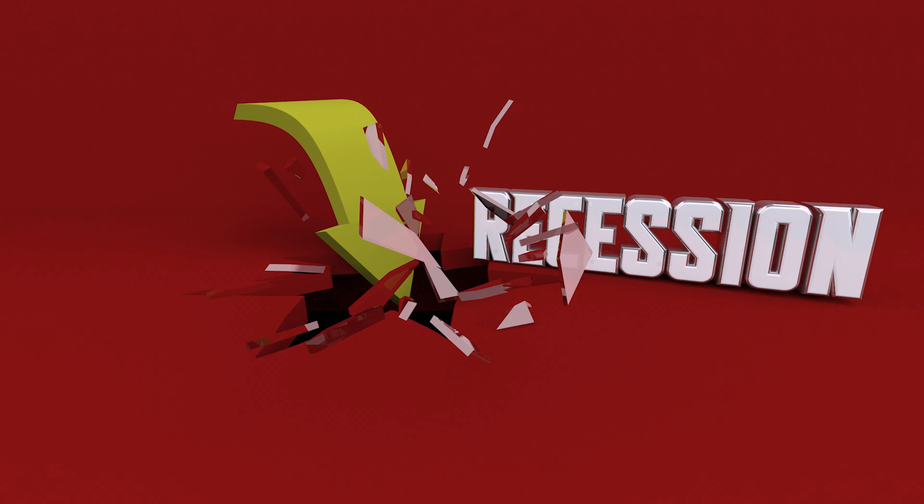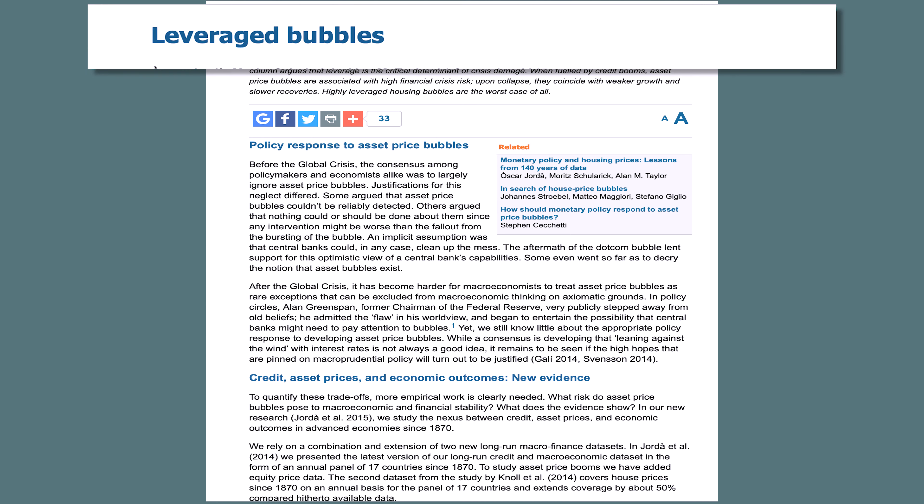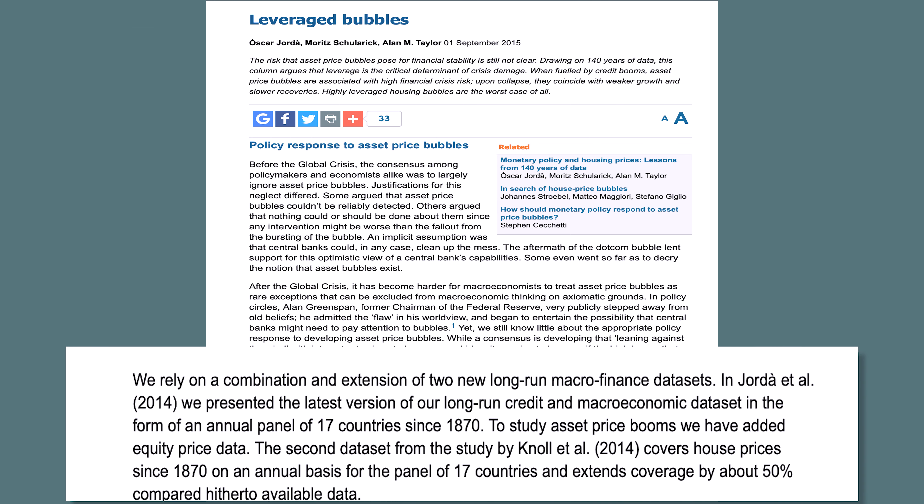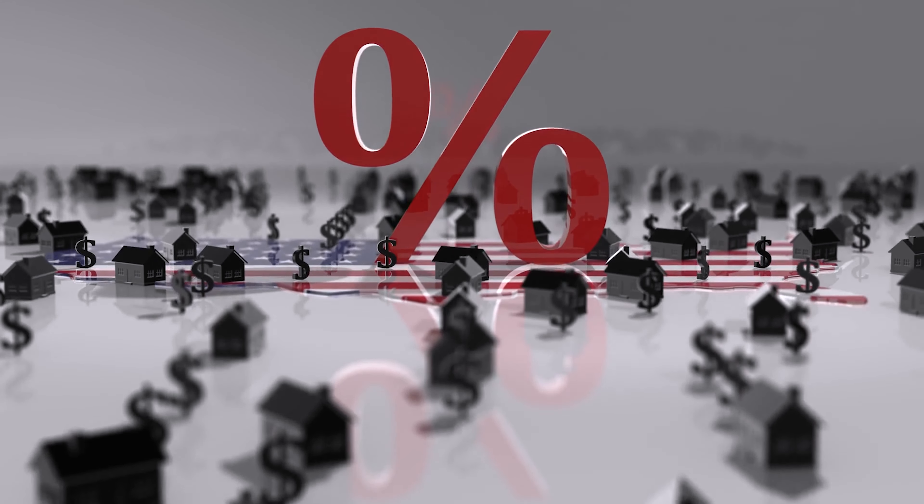A lot of things can happen when an asset bubble finally pops, as it always does eventually. Sometimes the effect can be small, causing losses to only a few, but other times it can be followed by a stock market crash and an economic recession or even a depression. It depends on how big the bubble is — whether it involves relatively small asset classes or significant sectors like tech stocks or real estate — and how much investment money is involved. A 2015 research study called Leverage Bubble examined asset bubbles in 17 countries going back to the 1870s, finding that the more credit involved, the more damaging the bubble's pop. Debt-fueled equity bubbles lead to longer recessions, and even worse were leveraged housing bubbles like the one that popped in 2006–2007, leading to the mortgage crisis and the Great Recession.